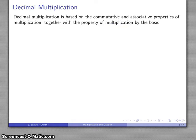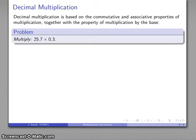And so decimal multiplication really starts off, really relies on our commutative and associative properties of multiplication, together with the property of multiplication by the base. So, for example, let's take a look at 25.7 times 0.3.